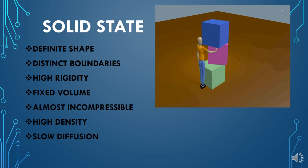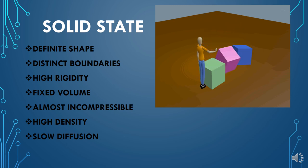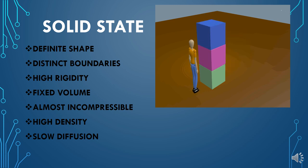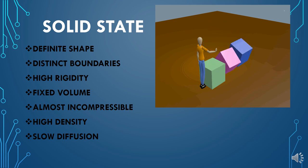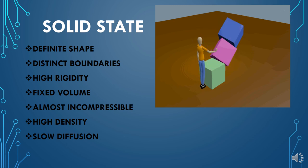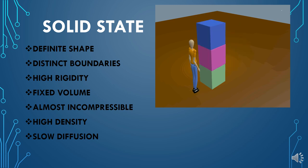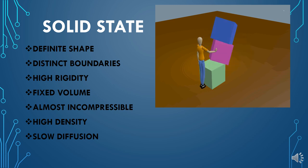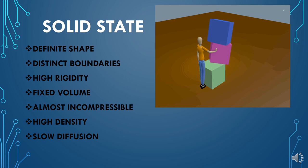Solids are highly rigid — no matter how much force you apply, you cannot change their shape. Next, solids have a fixed volume. Volume is the three-dimensional space occupied by an object. Since solids have a fixed shape and fixed boundaries, they obviously occupy the same space — meaning they have a fixed volume.